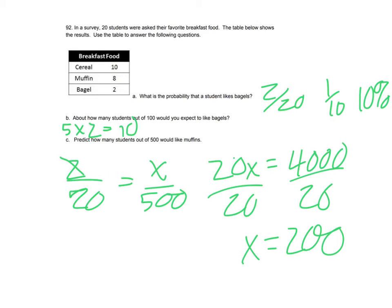And then predict how many students out of 500 would like muffins. So I just took the eight out of 20 and set that equal to the unknown amount of students over 500. And so then I did a cross multiply, 20X is equal to 4,000, divided both sides by 20 and X is 200. So about 200 kids would like a muffin if we surveyed 500 students.